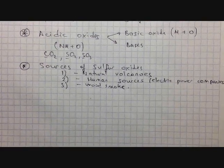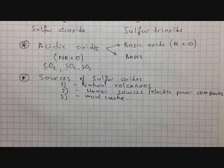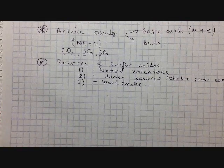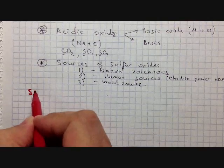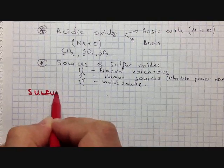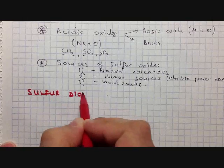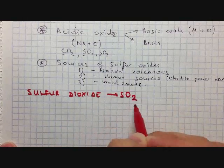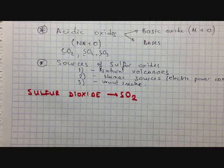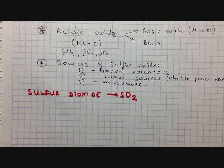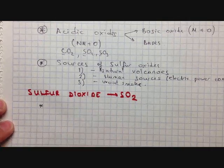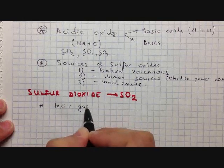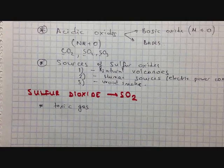Now let's move to sulfur dioxide. Sulfur dioxide is a toxic gas. At high concentrations it can result in breathing problems, particularly with asthmatic children.